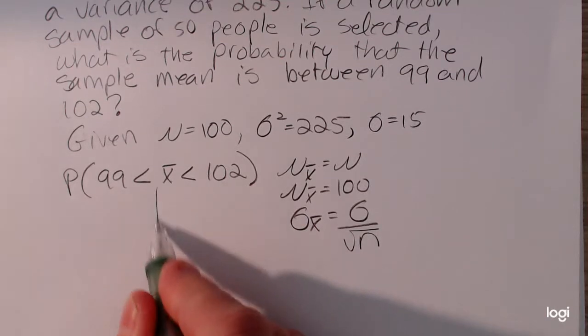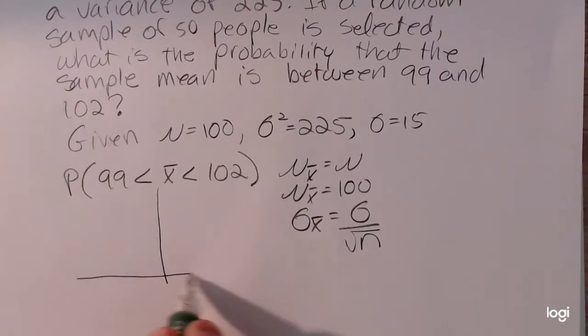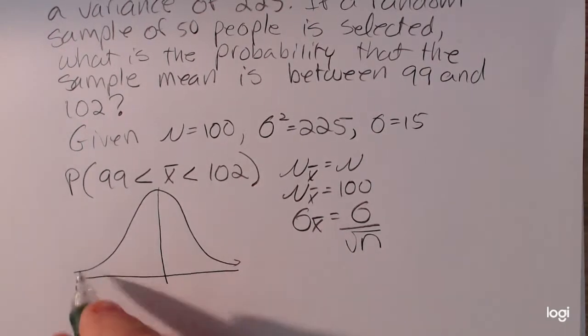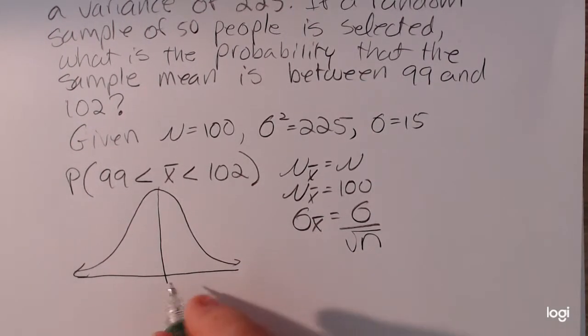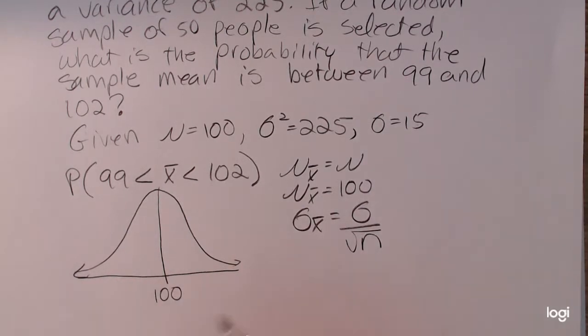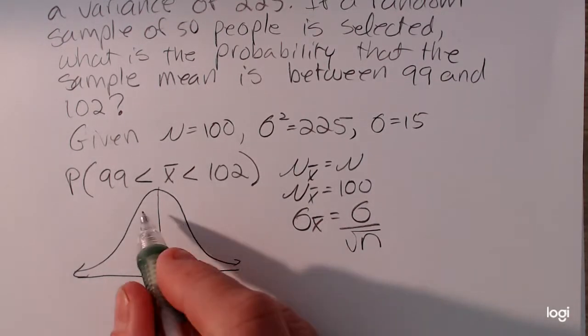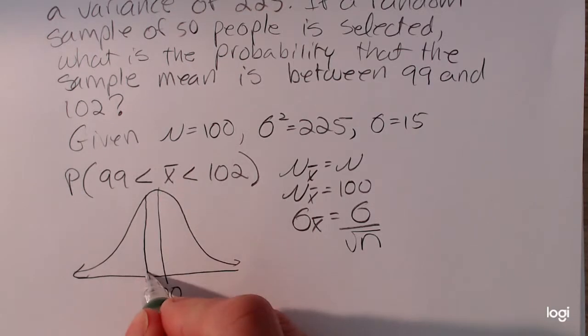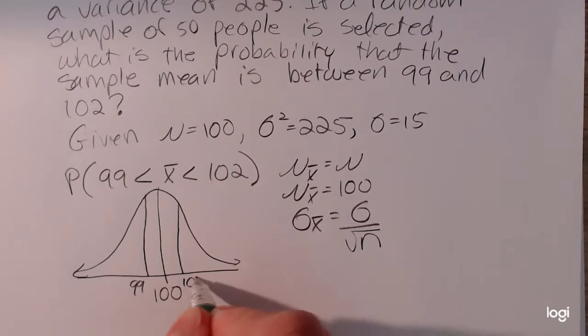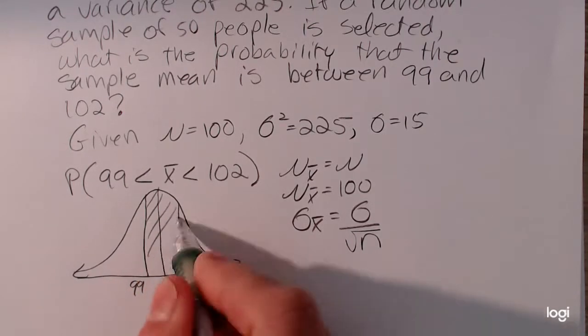Alright, so I want to sketch the area that I'm looking for. Again, X bar will be normally distributed with a mean of 100. And I'm going from 99 up to 102. And I want to shade in between.